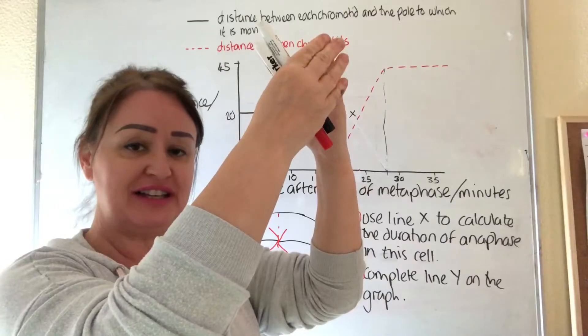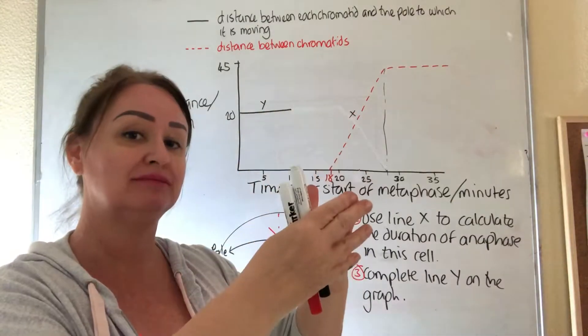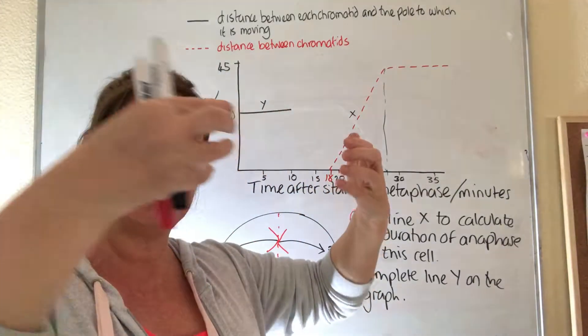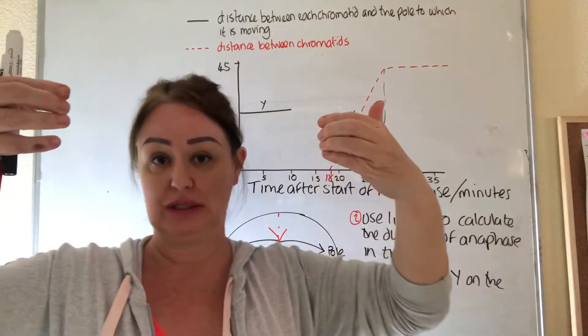So let's just recap. Metaphase is where they all line up in the middle. Anaphase is from when they start to be pulled apart and they land at their opposite poles in the cell.